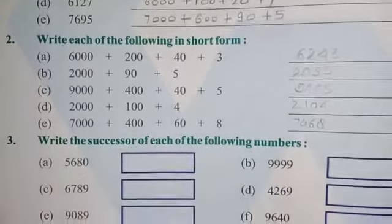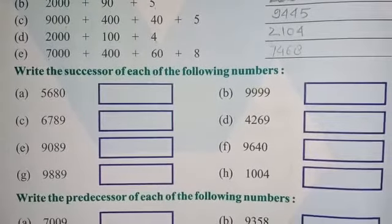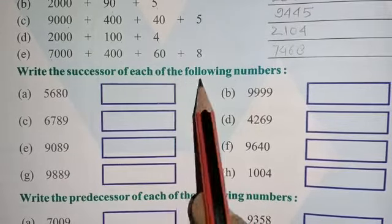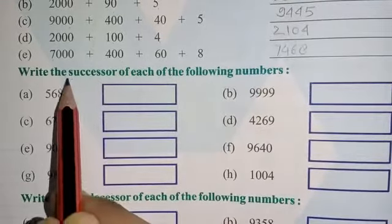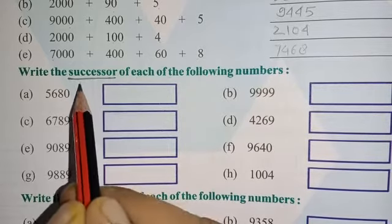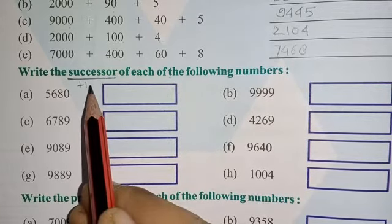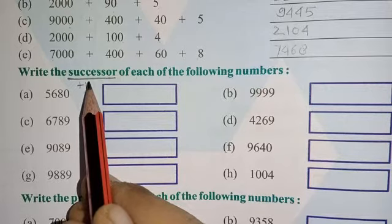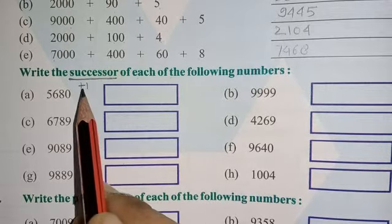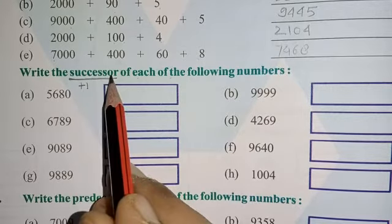Now come to question number three: write the successor of each of the following numbers. Successor means plus one — it means the next number. Just as after one comes two, after two comes three — adding one to any number gives its successor.